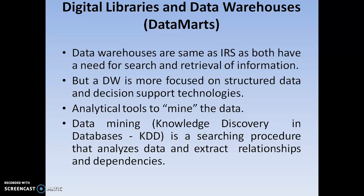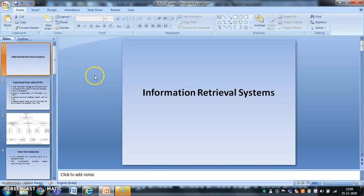It is possible to integrate information retrieval systems along with data warehouses if we process the information in a structured format. That particular information can then be retrieved, accessed, analyzed, and used to find relationships and dependencies among the data. Likewise, information retrieval systems can relate to data warehouses, data marts, and database management systems. There are various kinds of information retrieval system types that can integrate with any one of these.